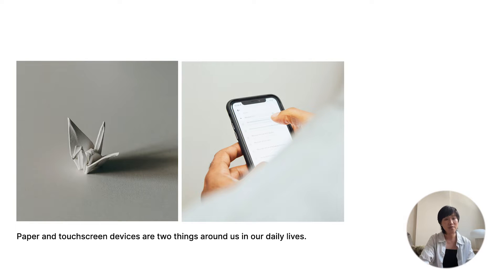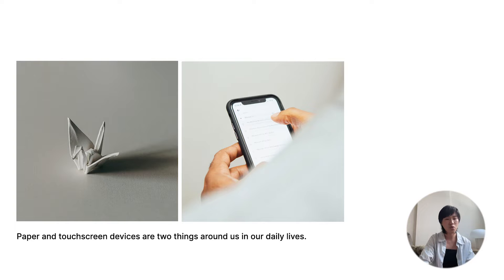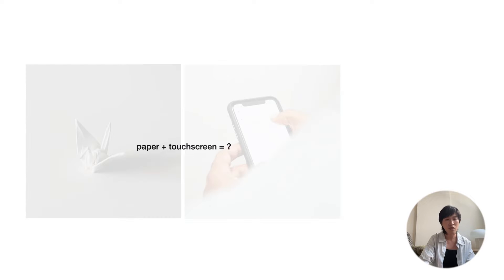There are two things we are all familiar with and love: paper and touch screen. Paper has been around us for centuries. We use it to draw down our ideas, doodle on it when we are bored, and fold origami creatures. It is a versatile medium of expression. Meanwhile, touch screen devices offer us an entire digital world to explore, which we can conveniently access with just a little tap. So what happens when we bring these two things together for tangible interaction?